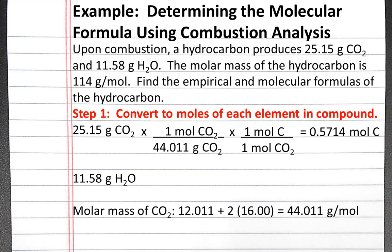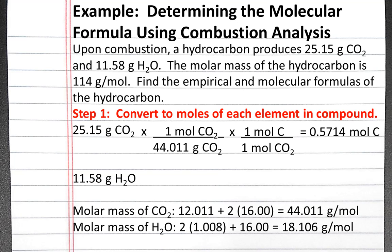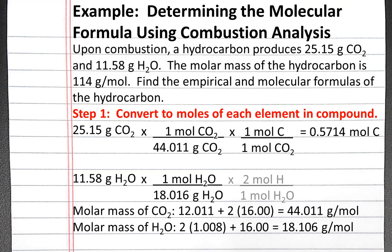Now we can convert grams of H2O into moles of hydrogen. First we need the molar mass of H2O. There are two hydrogen atoms and one oxygen atom, so that's 18.016 grams per mole. We use this to convert from grams of H2O to moles of H2O, then use the formula for H2O to convert to moles of hydrogen — there are two moles of hydrogen per mole of H2O. This gives us 1.286 moles of hydrogen.